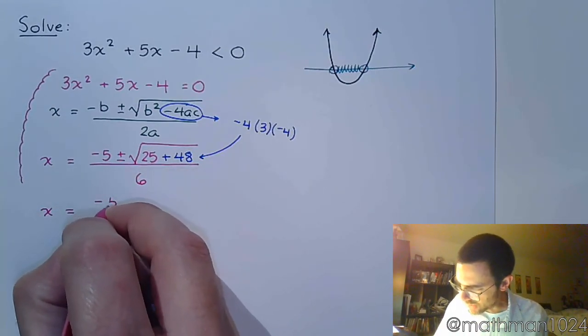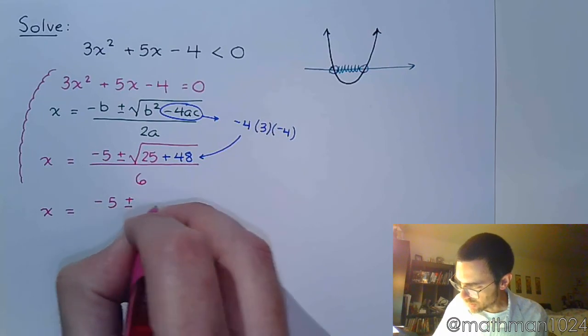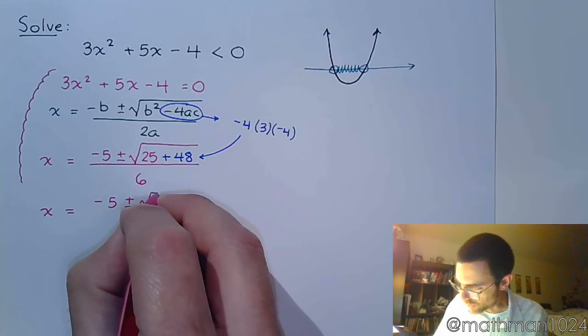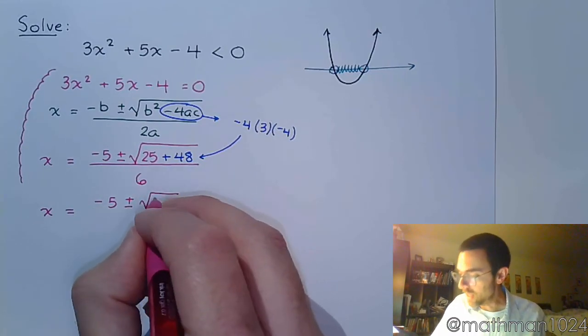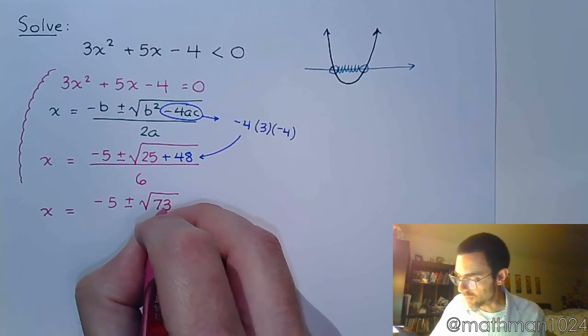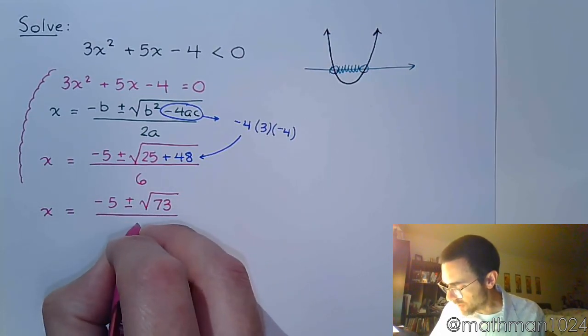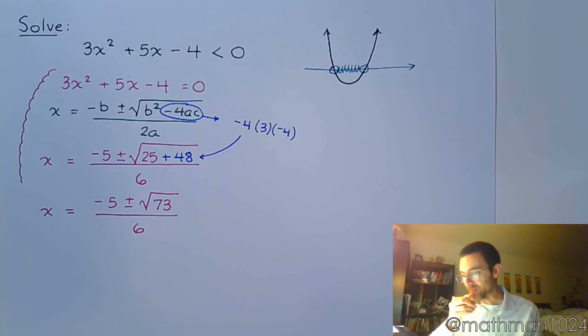So we get X is equal to negative 5, plus or minus the square root, 25 and 48 is 73, and this is all divided by 6. So these are our critical values.